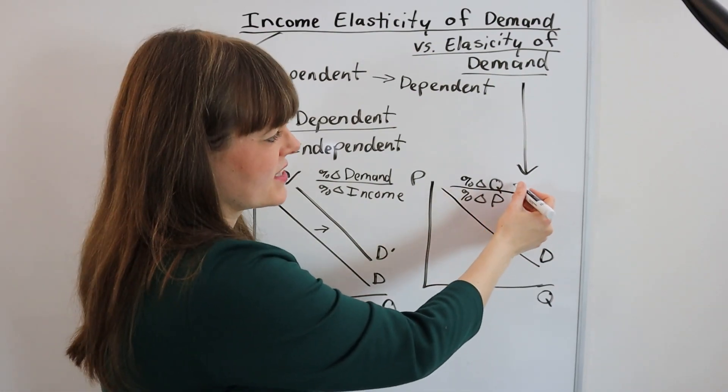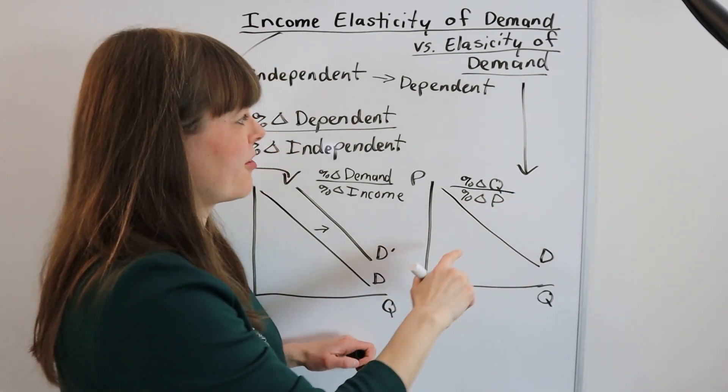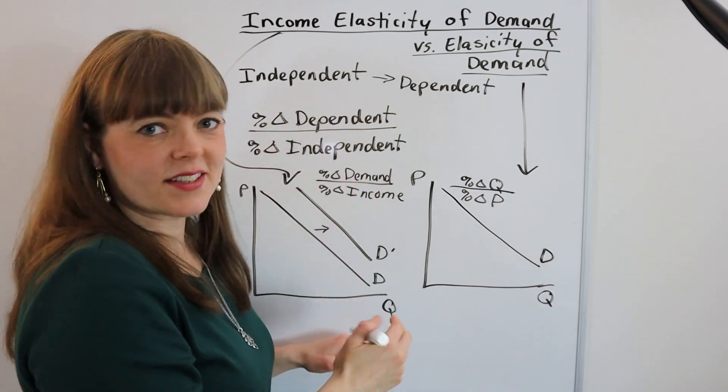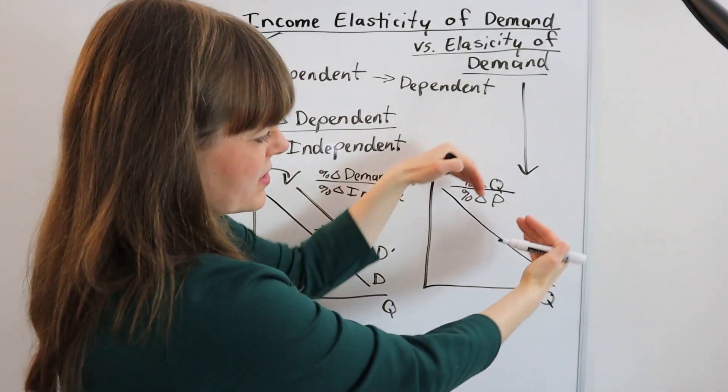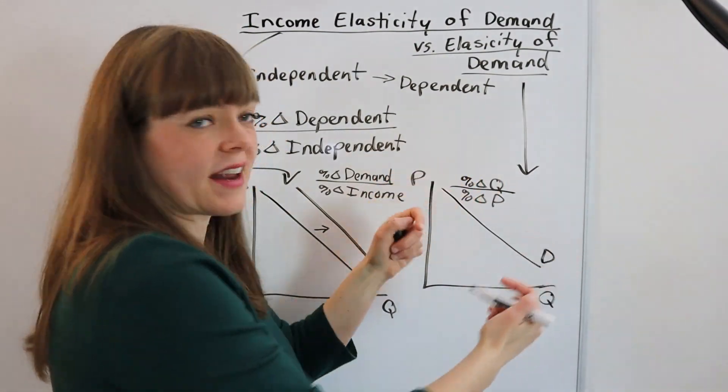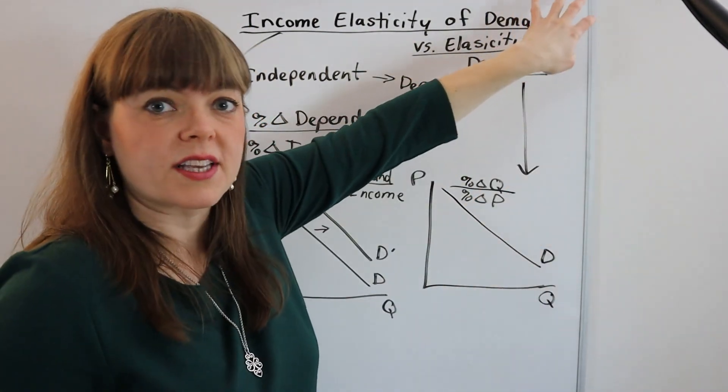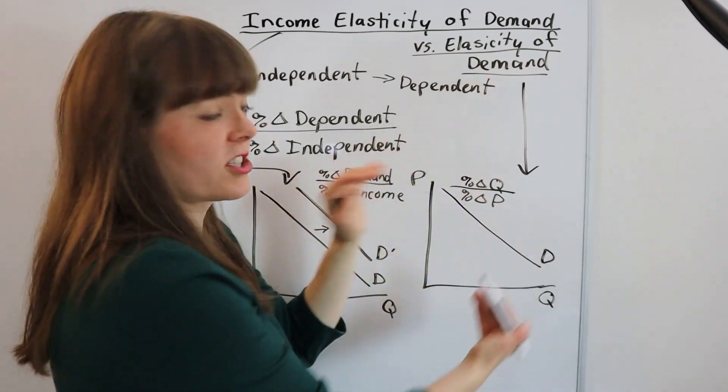where the numerator of course is the dependent variable, the denominator is the independent variable, this is going to capture the shape of the demand curve, whether it's steep or whether it's flat. That's regular old elasticity of demand, it's just the shape of the curve.